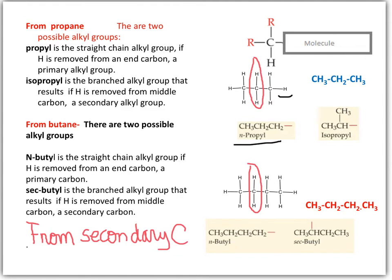Butane has two different kinds of carbons — a primary carbon and also a secondary carbon. When the hydrogen is removed from a primary carbon, we form butyl as a primary alkyl substituent. When the hydrogen is removed from a secondary carbon, then we have the alkyl group named sec-butyl. The name sec-butyl relates to the type of carbon where the hydrogen is removed.